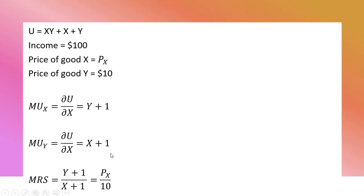We're going to form the utility-maximizing condition, where the marginal rate of substitution equals the ratio of the prices. So the marginal rate of substitution is the marginal utility of good X, Y plus 1, divided by the marginal utility of good Y, X plus 1, and we set that equal to the price of good X divided by the price of good Y.